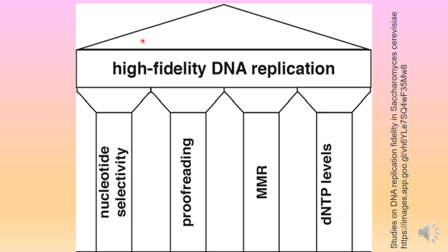The high fidelity of DNA replication is possible because of certain features in the process. The first is nucleotide selectivity — the polymerase is able to select the incoming nucleotide. The second is proofreading, where it checks its own processing and ability to replicate correctly. The third strategy, after replication is over, is mismatch repair.